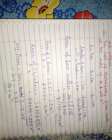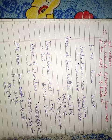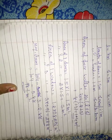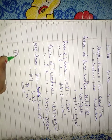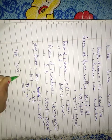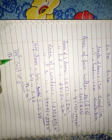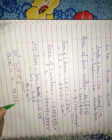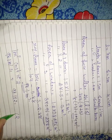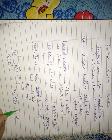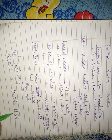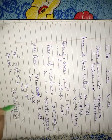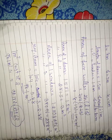For the second part, we find the cost of distempering from inside at the rate of two rupees per square meter. One square meter cost equals two rupees. So ninety eight point one two square meter cost equals ninety eight point one two multiply two equals one hundred ninety six point two four rupees.